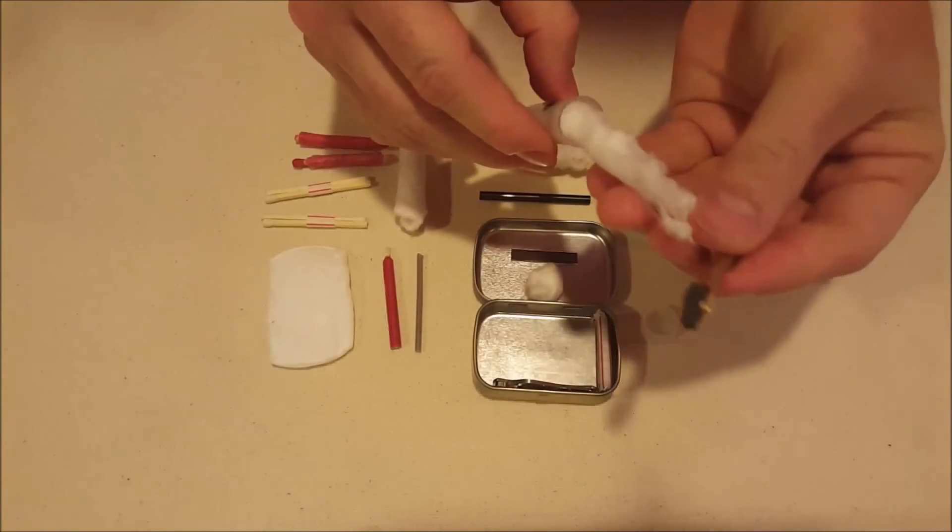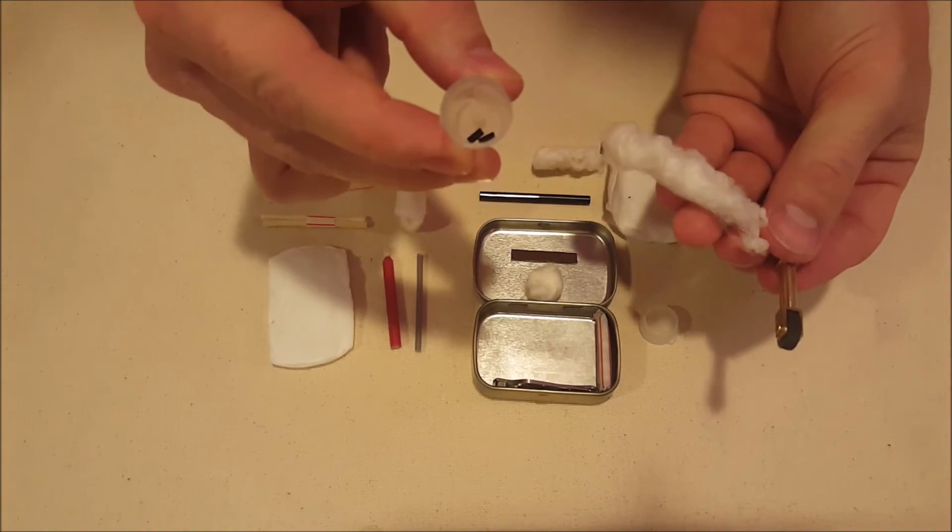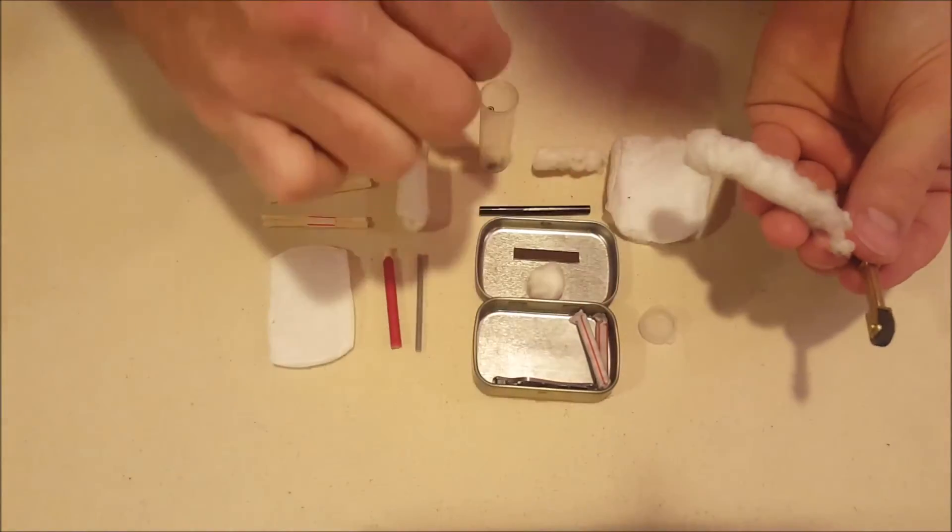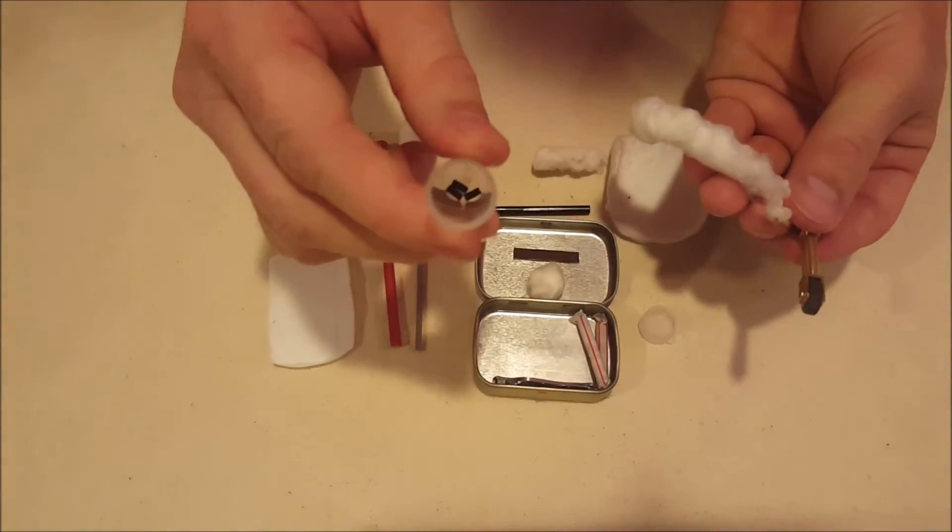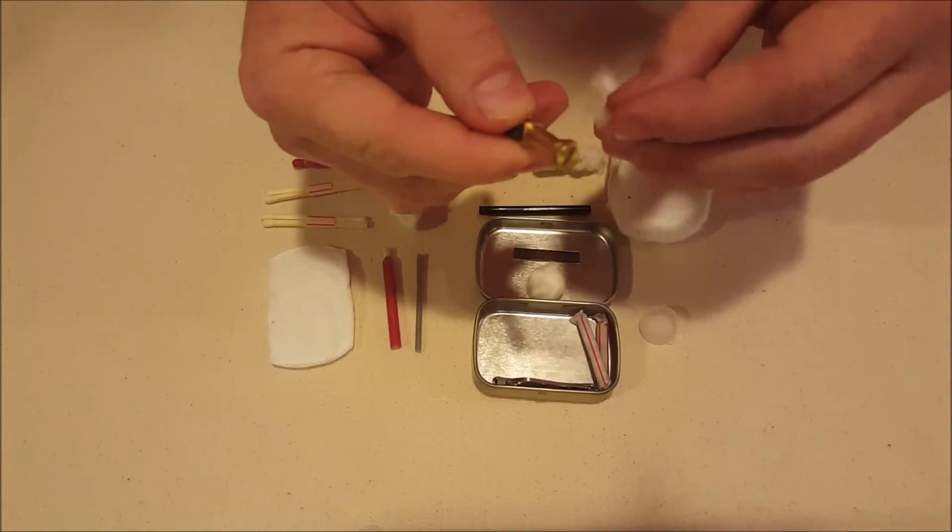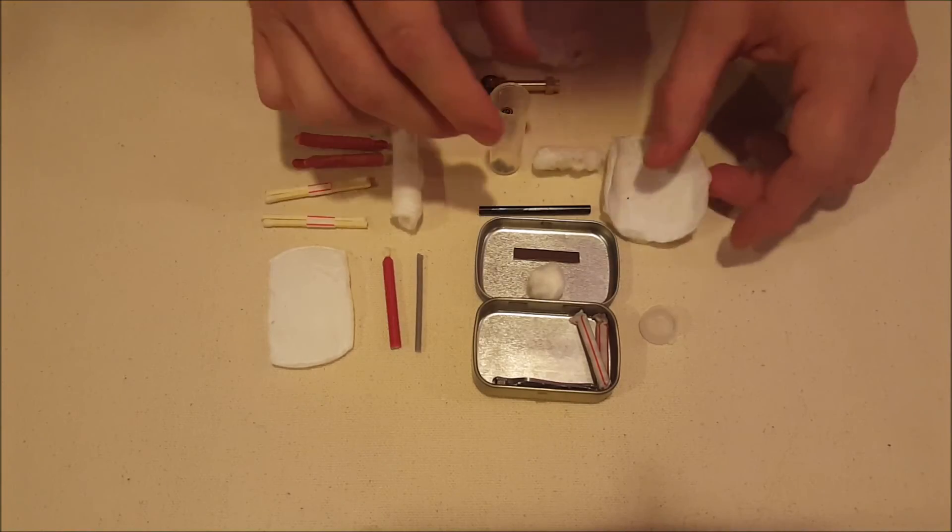And then in the bottom, it also comes with three other flints in case one runs out. Actually, that was two, so there's the third one. So it comes with three other flints in case when this one runs down, you just undo the back there and you can slide another flint in.